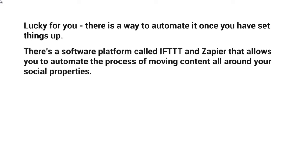There's a software platform called IFTTT and there's another one called Zapier.com that allows you to automate the process of moving content all around your social property. So you could take a YouTube video and have it pushed — meaning embedded — on your WordPress site, and then have it shared on your Facebook fan page, your Twitter page, your Instagram, and all of that. You have essentially what we call triggers: whenever the trigger happens, then something else happens.